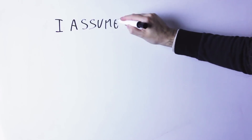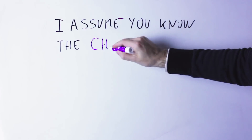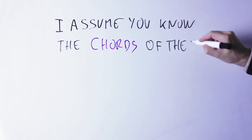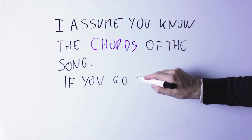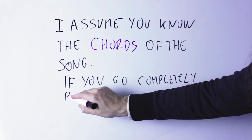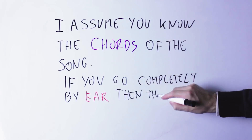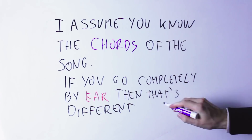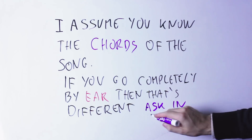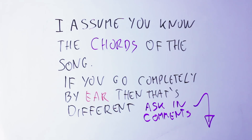In this video I assume you have the chords of the song, whether because you found them online or because you transcribed the song. If instead you want to find the key of a song completely by ear — not starting from the chords — the procedure is slightly different, and I will do that on video if enough of you request it in the comments. But let's see how to find the key of a song starting from the chords.